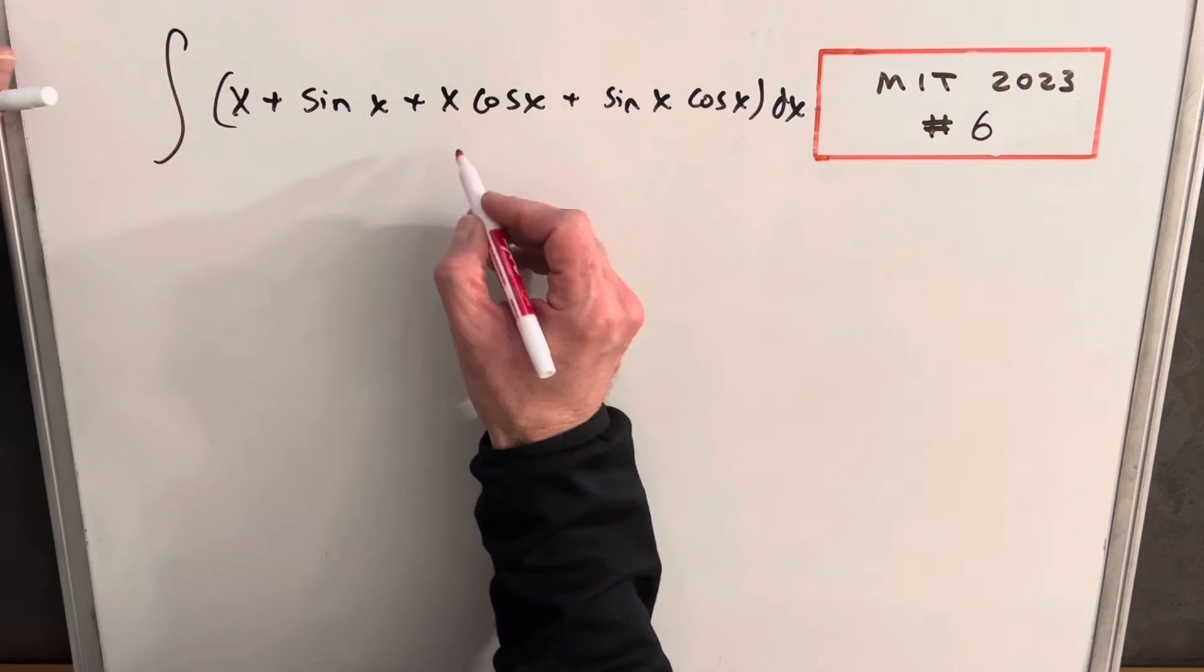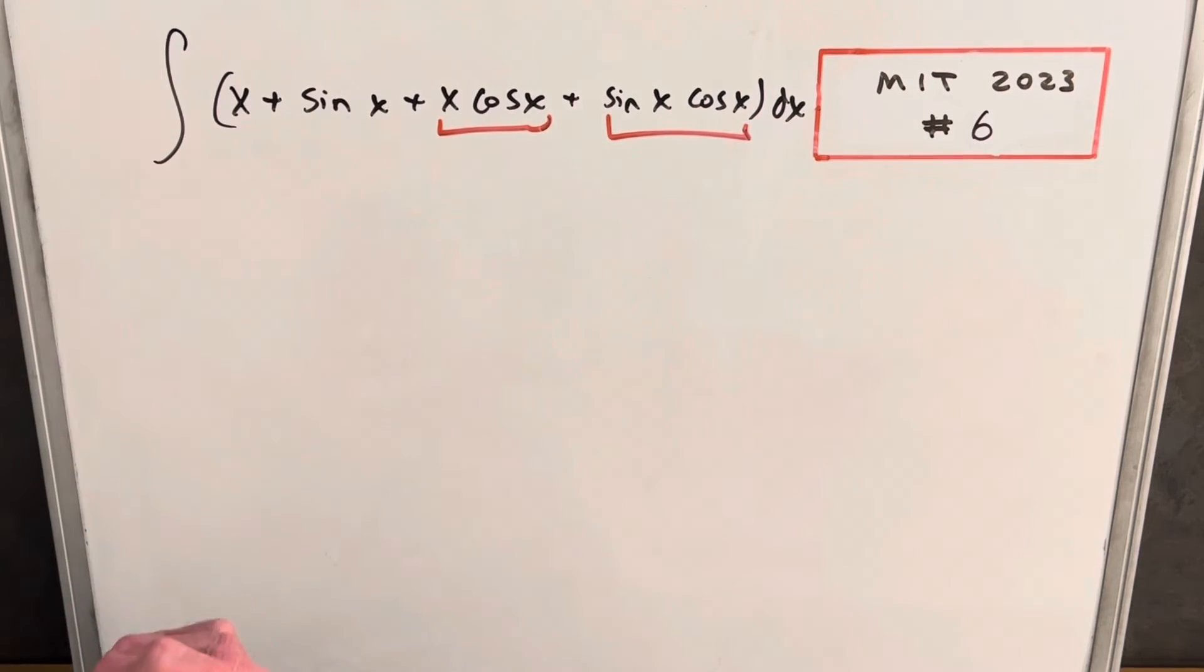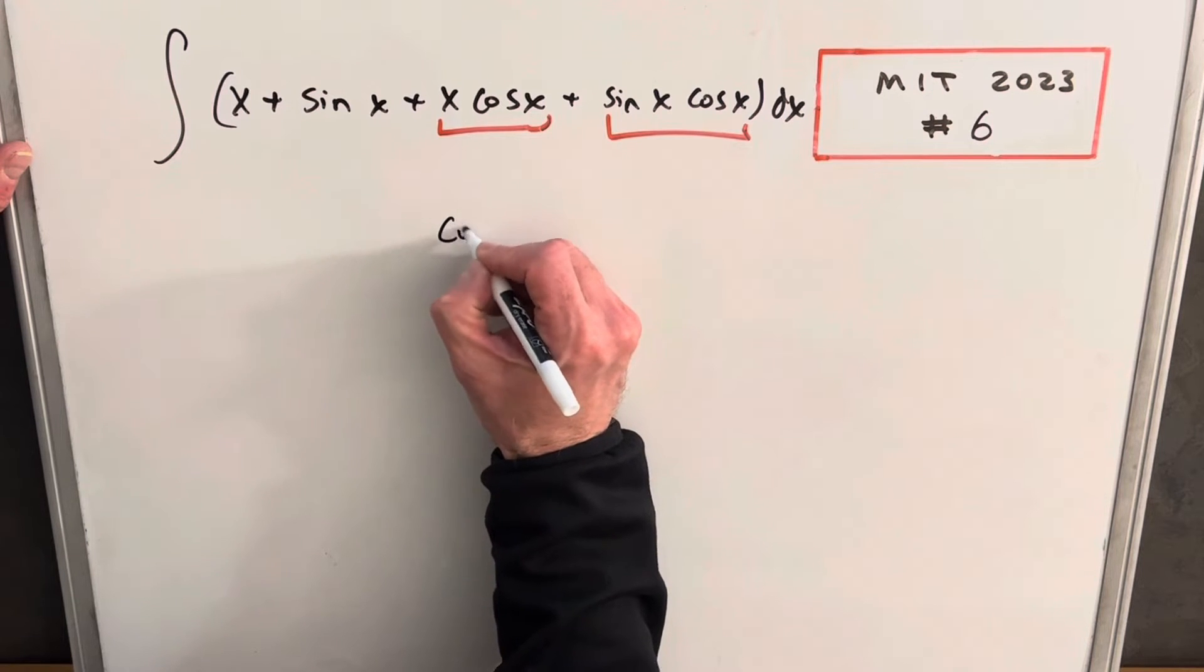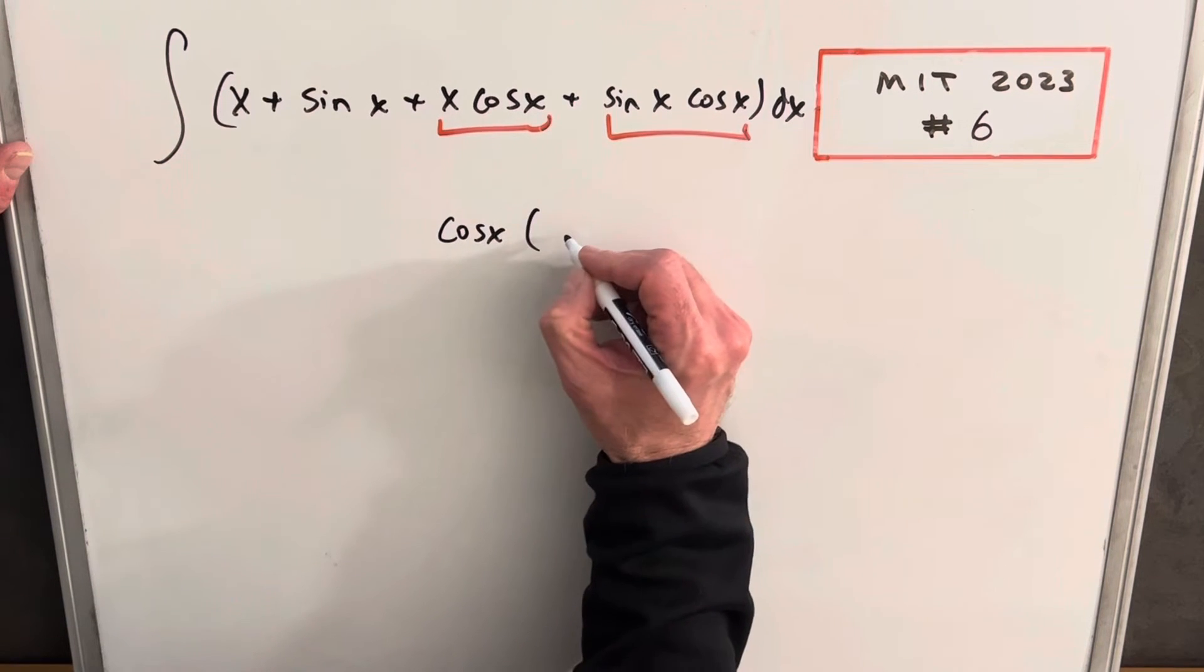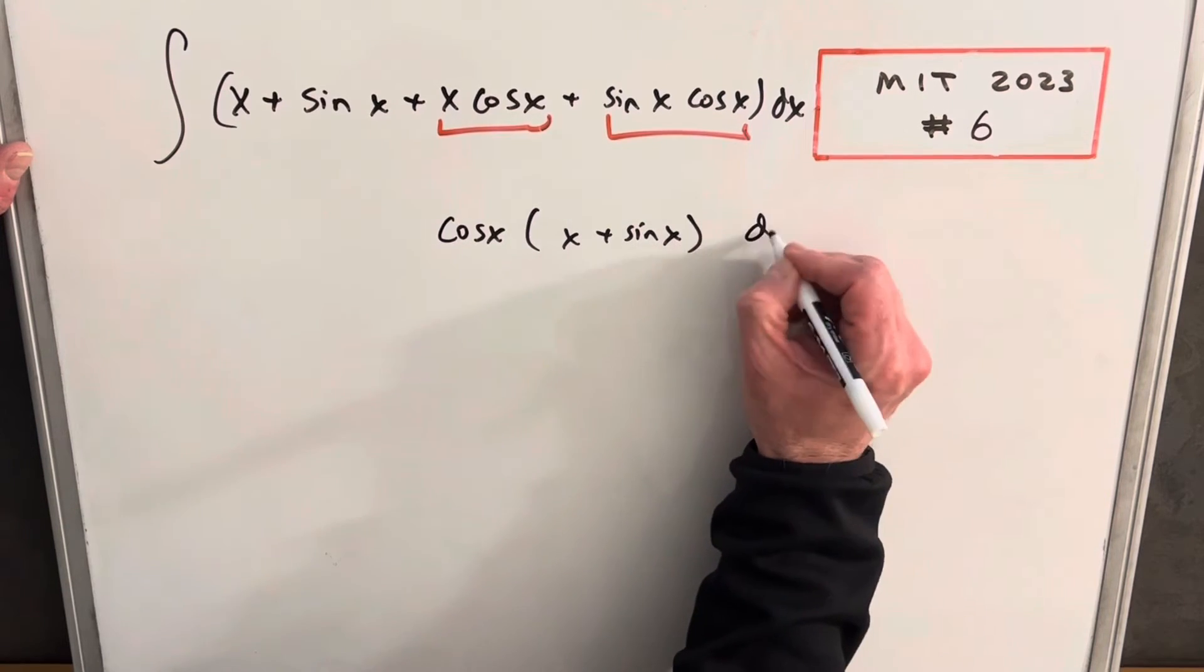Maybe we'll have to group this and factor it. Like I notice here and here we have a cosine in common. So let's look what happens when we factor out a cosine here. So we're going to have cosine x times x plus sine x over here, dx.